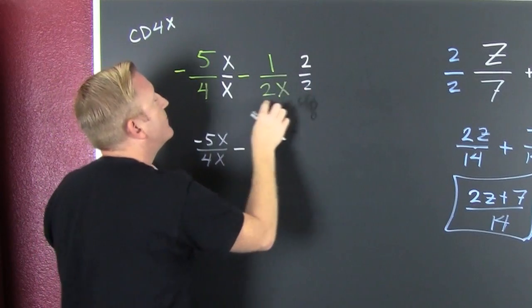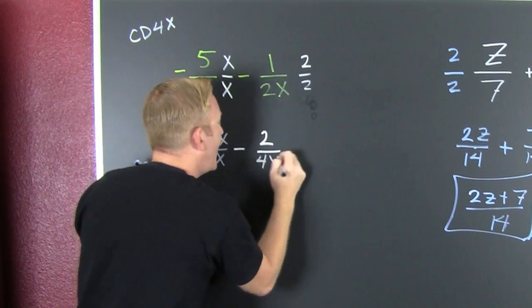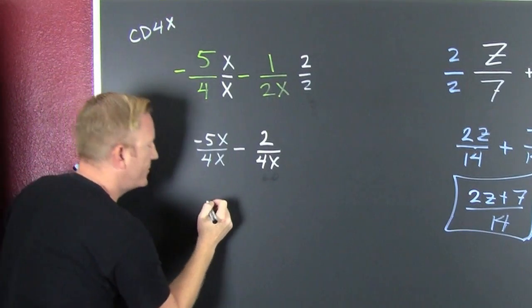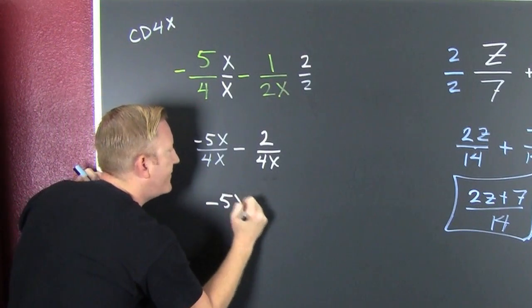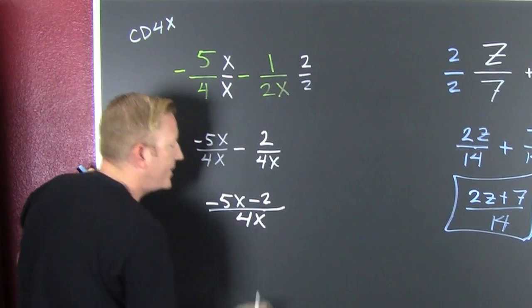If I can multiply once, then I can multiply twice. Yeah. So, that's a 2 over a 4X. And now that I have common denomination, I can go ahead and I can subtract those numerators. So, that's a minus 5X minus a deuce divided by a 4X. What's next?